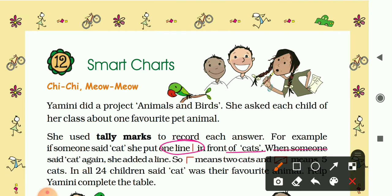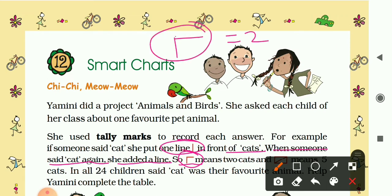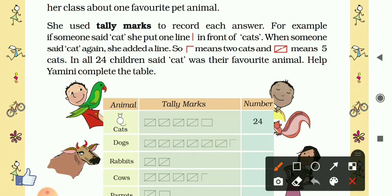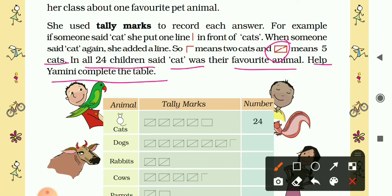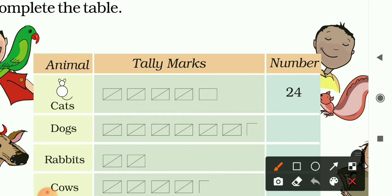When someone said cat again, she added another line — so this is one and two cats. Similarly, one box is showing five cats in all. 24 children said cat was their favorite animal. Now let's help Yamini complete this table, but first we need to understand what tally marks are.